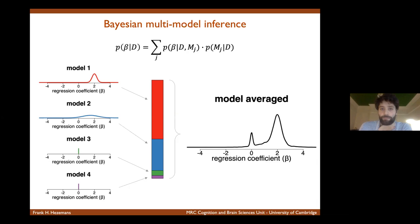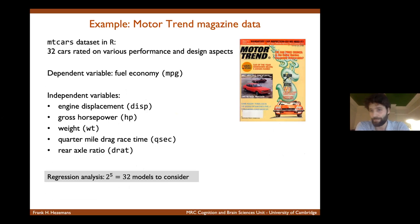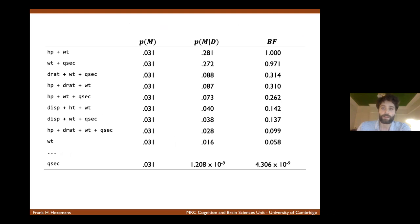Now, let me show you just a practical example of how this works with real data. I'm going to use this example data set, which comes pre-installed with R. And I think it's a good example because it has a relatively modest sample size, 32 observations, where cars have been rated on various aspects of performance and design. And even with just five predictors, we already have 32 models to consider.